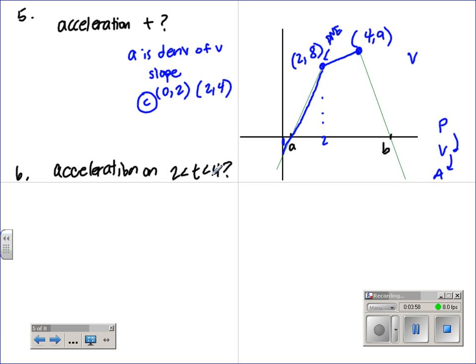The acceleration of two to four, again, we're looking for slope. So the slope here, we went up one over two, so the slope is one half, which is 0.5, and that's choice C.